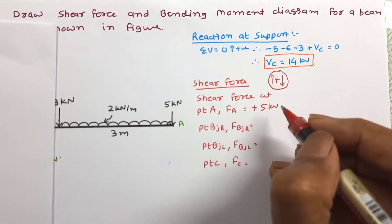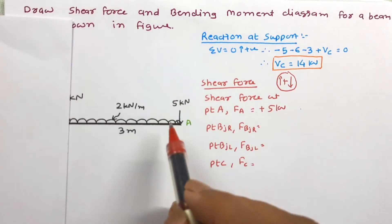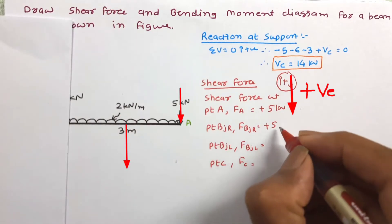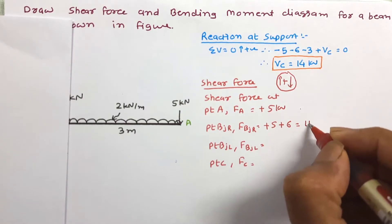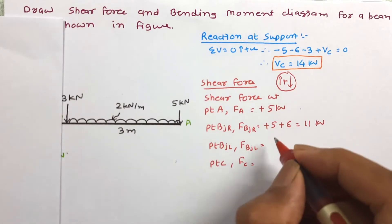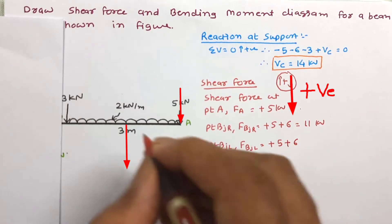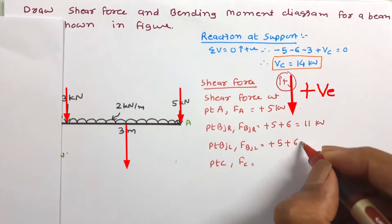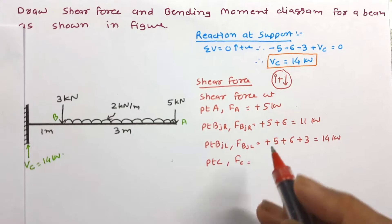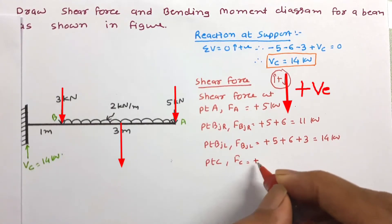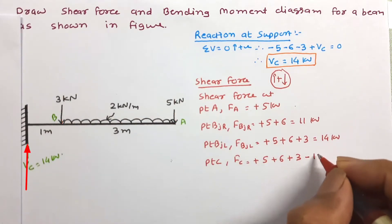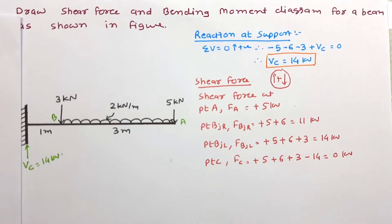At point B just left — UDL is completed and point load has not started — starting with 5 (downward, plus), then UDL 2×3 = 6 downward, so at B just left it is 11 kN. At B just right we also include the 3 kN point load: 5 + 6 + 3 = 14 kN. At point C: plus 5, plus 6, plus 3, minus 14 (support reaction upward) gives 0 kN.